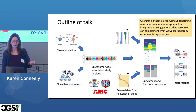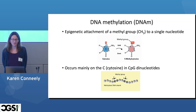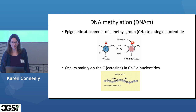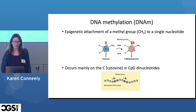DNA methylation is an epigenetic mechanism involving the attachment of a methyl group, or CH3, to a single nucleotide — usually a cytosine, as shown here. Here's a cytosine and here it is with a methyl group added to its five position. This occurs mainly on cytosines that are followed by guanines, and so these are known as CpG dinucleotides, as we see in the cartoon here — two CGs with little methyl groups attached.